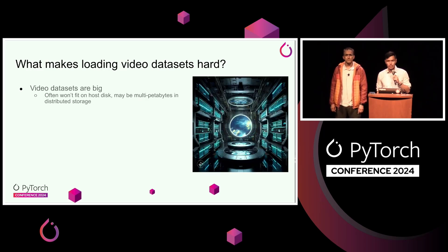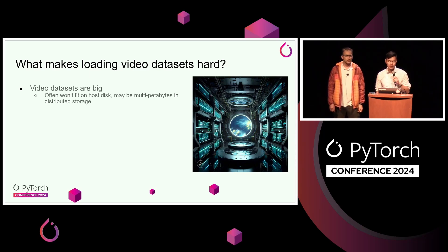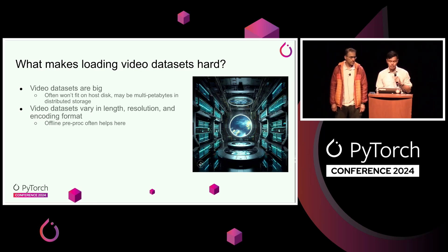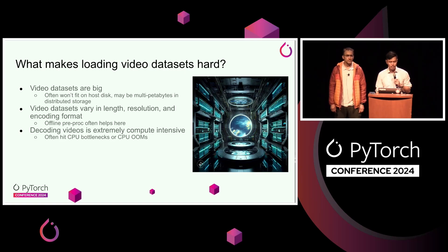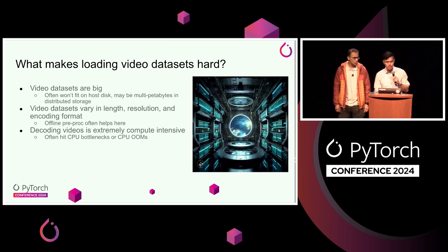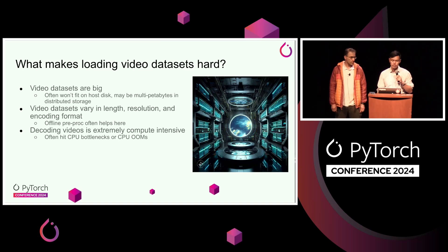What is it about video that makes it so difficult? First, video datasets are often really, really large — they could be multi-petabytes. They're not going to fit on your host disk and will be in distributed storage. There can also be a lot of variance in multiple dimensions: length, resolution, and encoding formats. You could do offline pre-processing to help with this, but that can be very expensive for large production-scale datasets. And lastly, decoding videos is extremely compute intensive — if you're using the host to decode, you will often hit CPU bottlenecks or CPU out-of-memory errors.